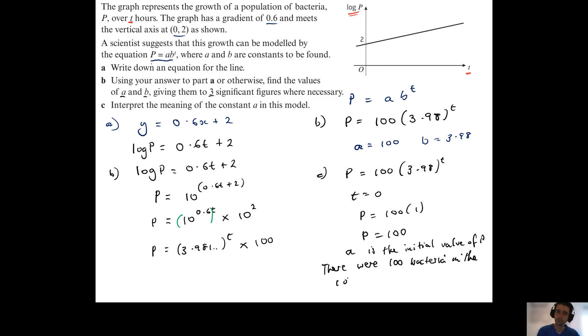So there we go. We were given a linear line with the vertical axis being log p and the horizontal axis being t. We were able to write a linear relationship linking t and log p.